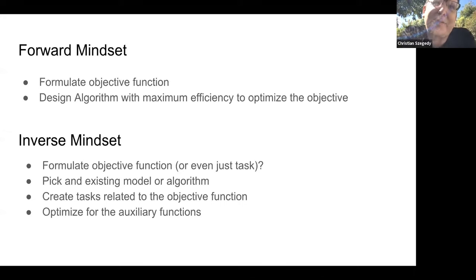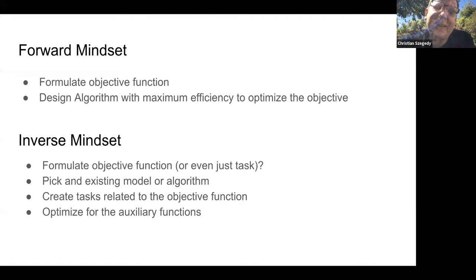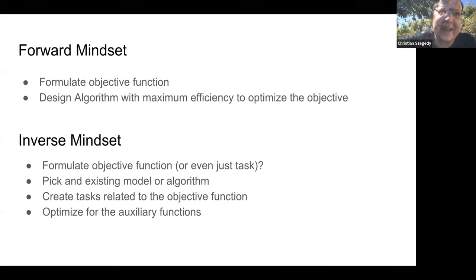That approach is a large part of the literature, especially before 2015, where people were doing complicated systems coping with the particular modality of the data. But with neural networks it changes a lot, because nowadays we tend to use more inverse ideas. In the inverse approach, we don't necessarily try to create a good architecture — we just take an off-the-shelf architecture, train it for some auxiliary objective function that is tangentially related to the task we want to solve, and then use that model as a more expert model.